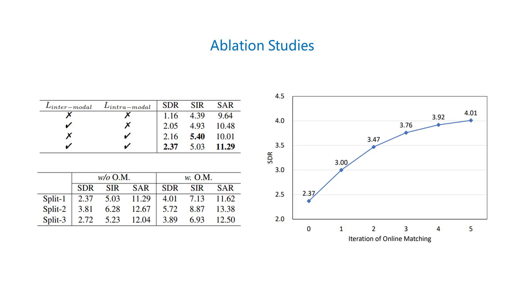We also show the ablation studies here. From the first table, we can see both intramodal and intermodal consistency contribute to the final results. The second table demonstrates that our framework is effective on various train-test splits rather than limited to certain specific instrument types. From the figure, we can observe that separation quality increases with more iterations during the online matching process, but there also exists a marginal effect.